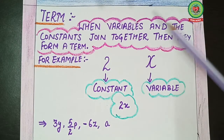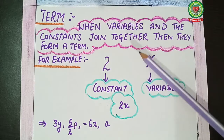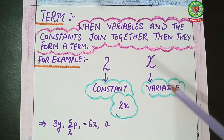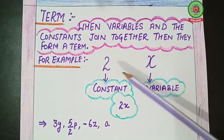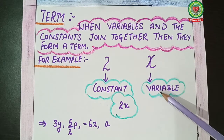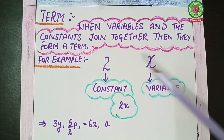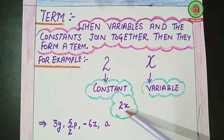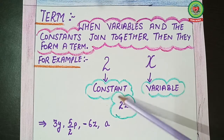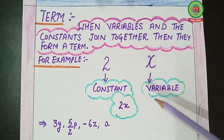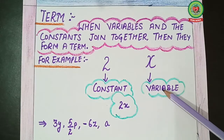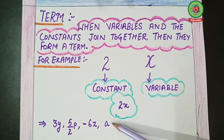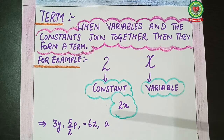Now we will talk about terms. When variables and constants join together, they form a term. For example, taking 2 (which is a constant) and x (which is a variable), if we write them together as 2x, it becomes a term. Whenever we join a constant and a variable and write them together, they form a term.